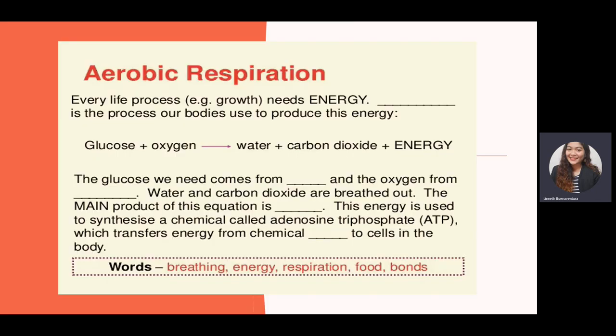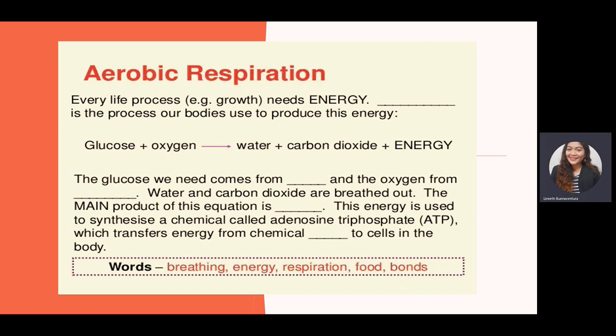This is the aerobic respiration — the longest process of cellular respiration. Every life process such as growth, development, and defense requires energy or ATP. In aerobic respiration, the body produces its own chemical energy: glucose plus oxygen produces water, carbon dioxide as a waste product, and energy in the form of ATP. The glucose we need comes from C6H12O6.